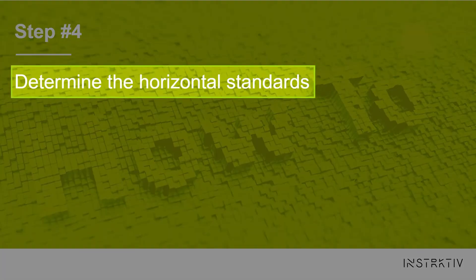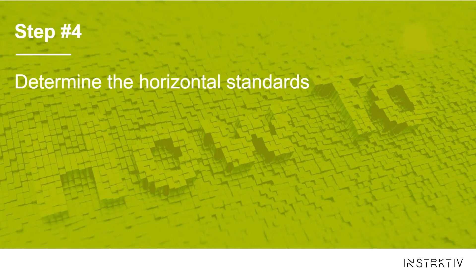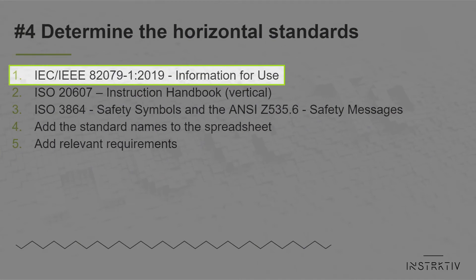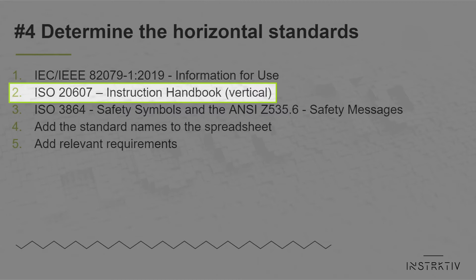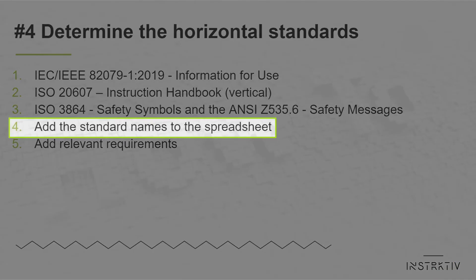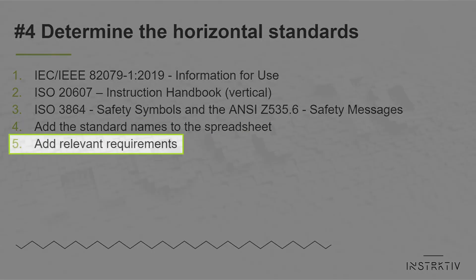In step 4 we're going to determine the horizontal standards. Besides the vertical standards that apply to a specific product group, horizontal standards apply to a broad range of product groups. The most important one is the 82079 standard on information for use, which contains almost all requirements to create information for use and gives guidelines for the content, presentation, and structure of your instructions. Another important standard is the ISO 2607 on instruction handbooks, which can be seen as an addition to the 82079 standard with specific requirements to comply with the machinery directive. Optionally you can purchase the ISO 3864 on safety symbols and ANSI Z535.6 on safety messages. Add the standard names to the first column of your spreadsheet and add the relevant requirements to the second column.